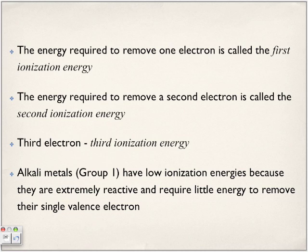The energy required to remove one electron is called the first ionization energy; removing the second electron is the second ionization energy; the third electron is the third ionization energy, and so on. Alkali metals have low ionization energies because they are extremely reactive and require little energy to remove their single valence electron — they want to reach that stable octet. To reach that stable octet, they must give up that one electron, so they have a very low ionization energy.